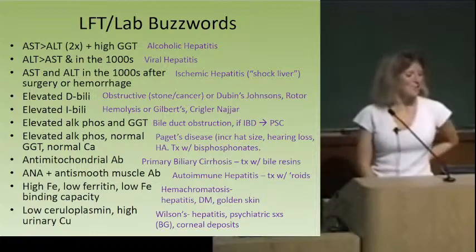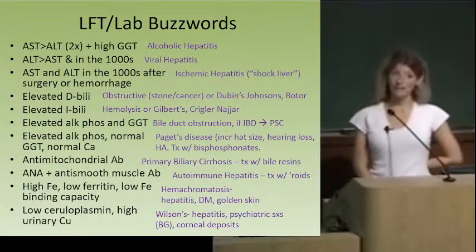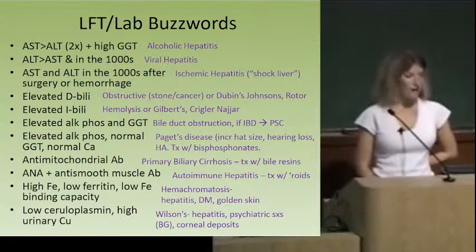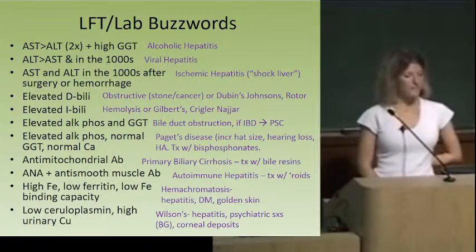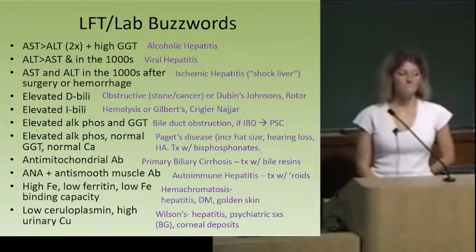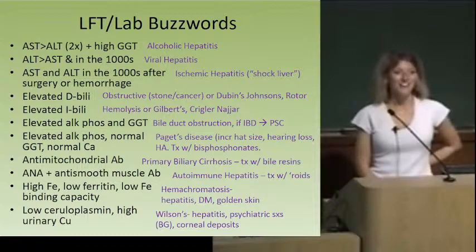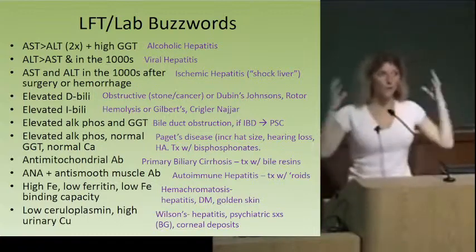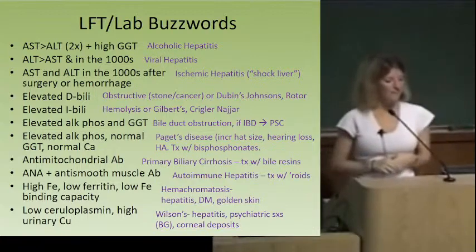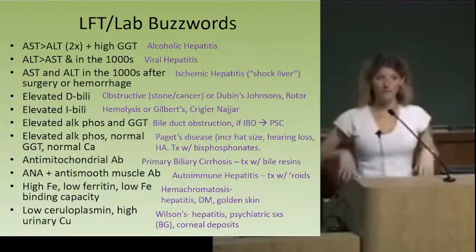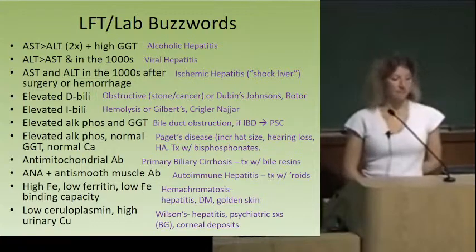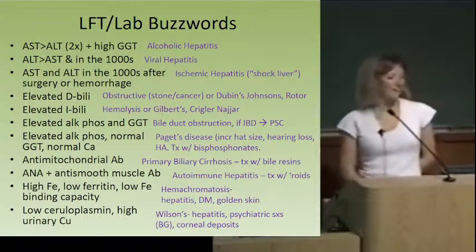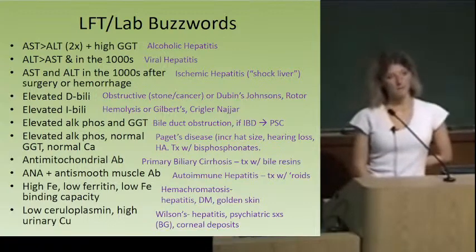Elevated alkaline phosphatase and elevated GGT — that's obstruction. If alkaline phosphatase is elevated but GGT is normal and calcium is also normal, think pregnancy — or in an old man, Paget's disease. Paget's also presents with having to buy a bigger hat as the skull thickens, and hearing loss because the ossicles get disrupted. If the anti-mitochondrial antibody is positive, that's primary biliary cirrhosis — also more common in ulcerative colitis. If the anti-smooth muscle antibody is positive, that's autoimmune hepatitis.